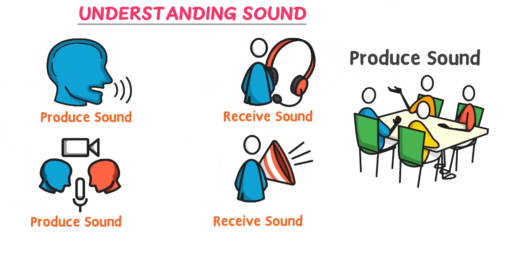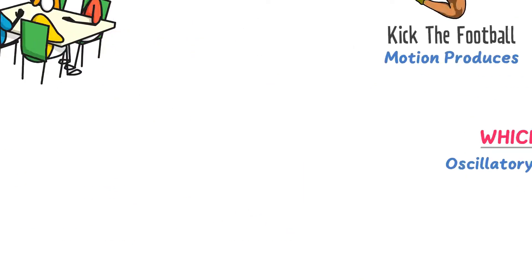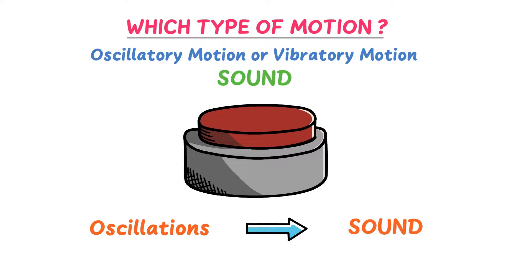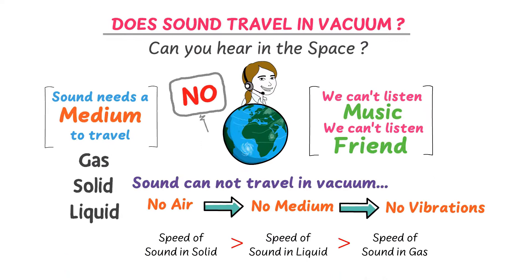To summarize: we learned that we either produce or receive sound. Secondly, sound is produced by the oscillatory or vibratory motion of an object. Thirdly, sound travels due to mechanical waves or longitudinal waves. Finally, as a bonus tip, sound doesn't travel in a vacuum or in space — it requires a medium to travel. This was all about sound.